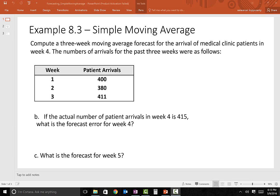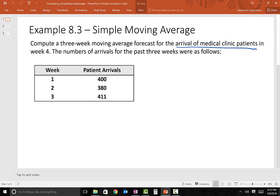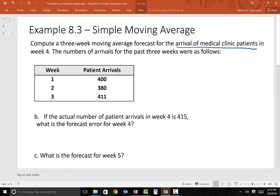Let's take a look at the first problem, example 8.3. What they've given us is the arrival of medical clinic patients for the last three weeks. This is the actual data. First week had an arrival of 400 patients, the second week had 380, and the third week had 411.